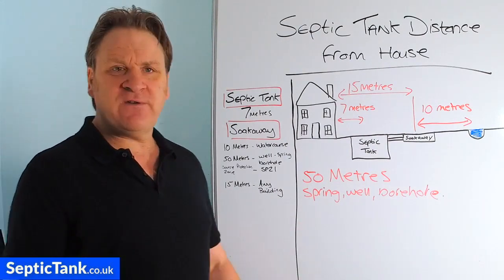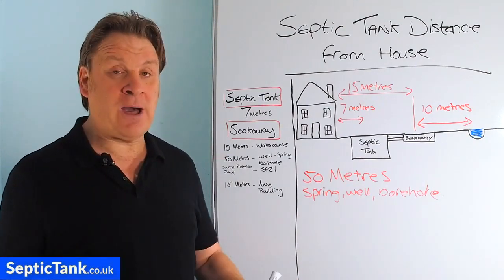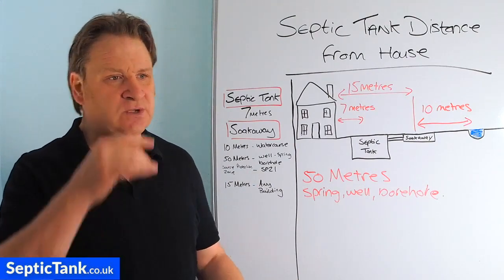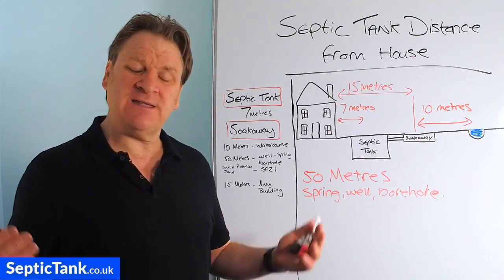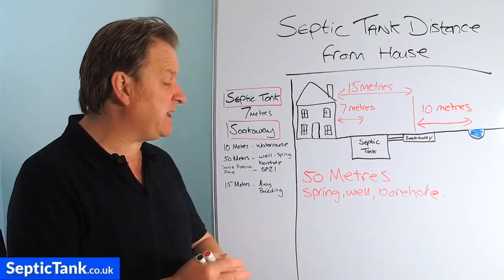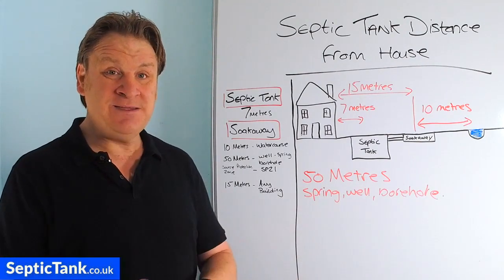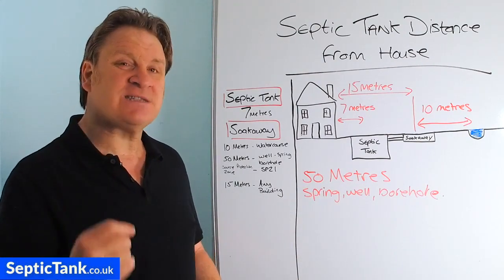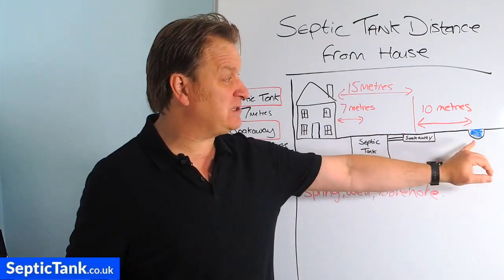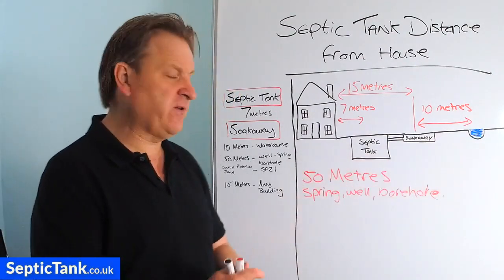For example, a couple of hundred years ago in London they had a cholera outbreak where people were dying. Cholera is a disease that comes from raw sewage, and thousands of people died. They eventually traced it back to the fact that raw sewage was contaminating the local springs and wells in London. That's the danger of your raw sewage being too close to springs, wells, boreholes, rivers and streams.